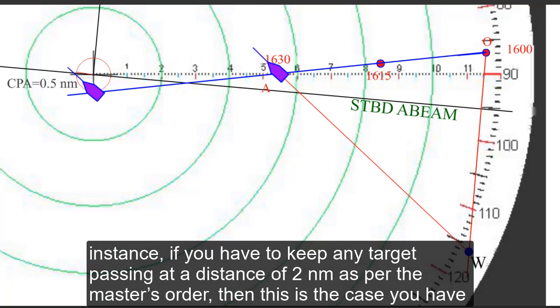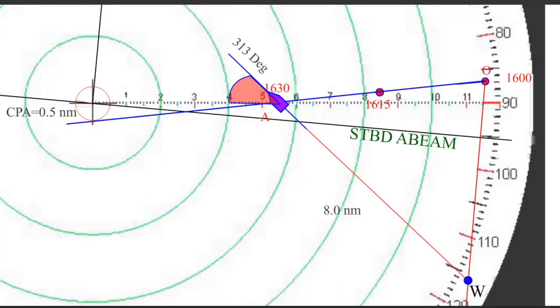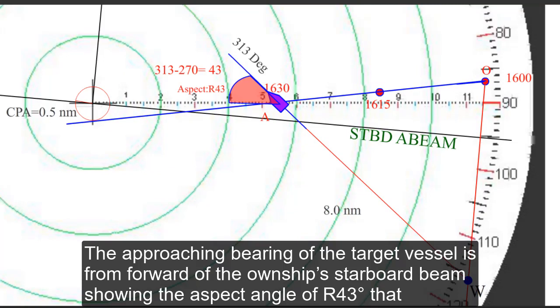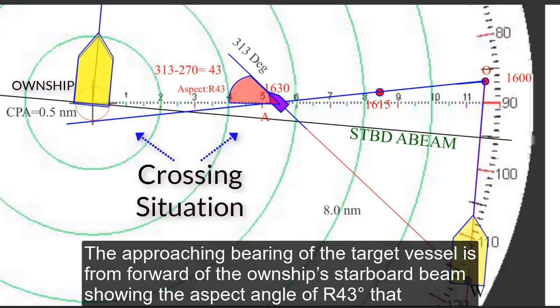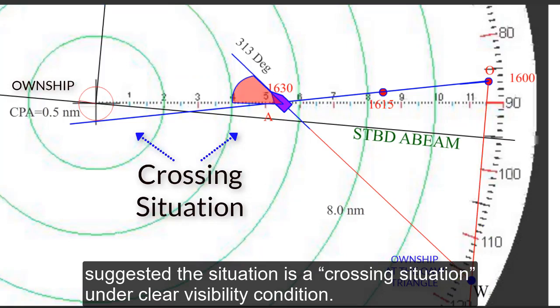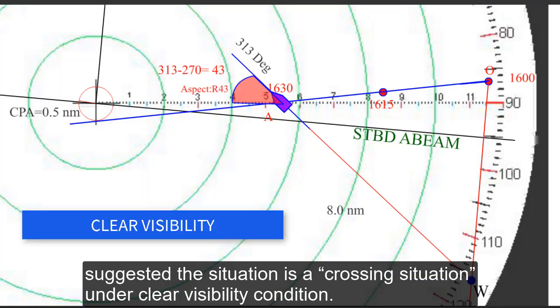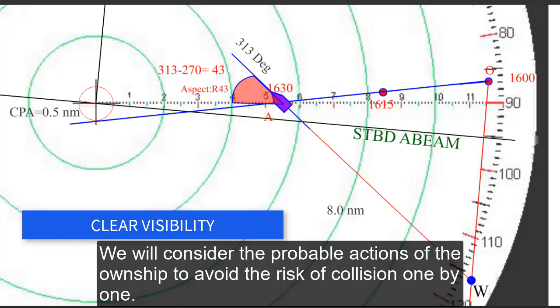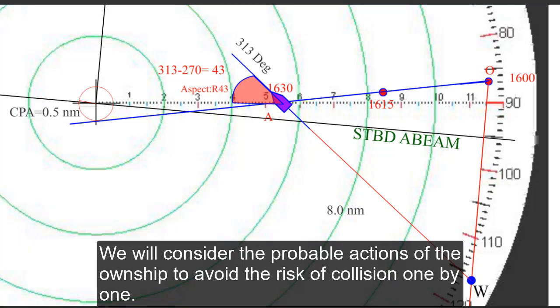For instance, if you have to keep any target passing at a distance of 2 nautical miles as per the master's order then this is the case you have to take avoiding action. The approaching bearing of the target vessel is from forward of the own ship's starboard beam showing the aspect angle of red 43 that suggests the situation is a crossing situation under clear visibility condition. We will consider the probable actions of the own ship to avoid the risk of collision one by one.